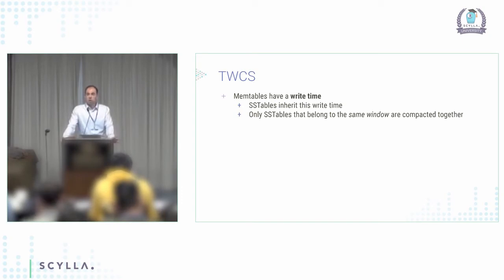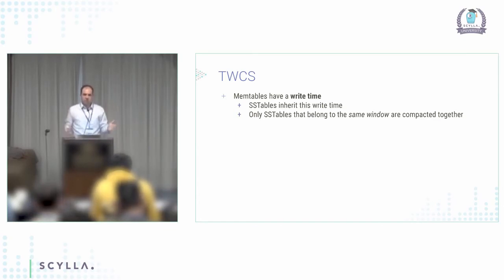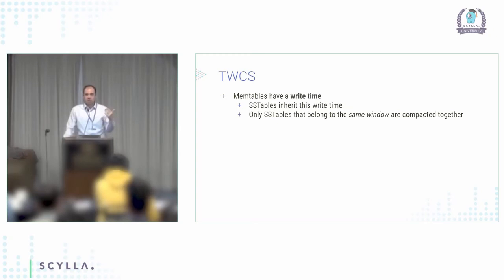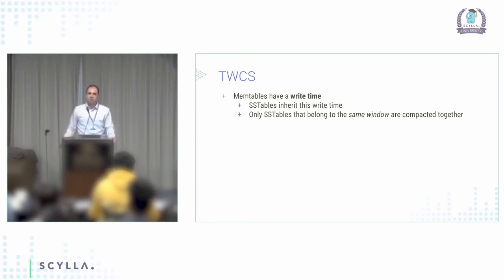The holy grail of time window compaction strategy is: because you know that all of the keys in this SSTable were written at the same time window, and if you have a TTL, you can actually drop the SSTable without even reading it. In the worst case, drop the entire table — but in our example, I can drop the entire SSTable without reading anything, because from the metadata I can see that 100% of the data is expired. I can see everything was written in a particular time window and I know I'm past it, so I drop it.